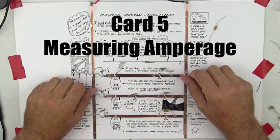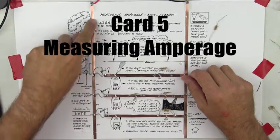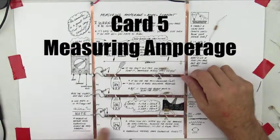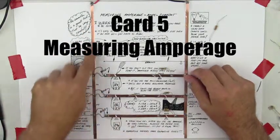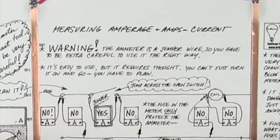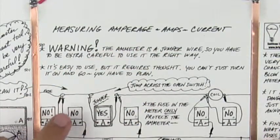Welcome to card number five, line numbers 500 through 510. And this is specifically measuring amperage, which is current, amps, amperage current.